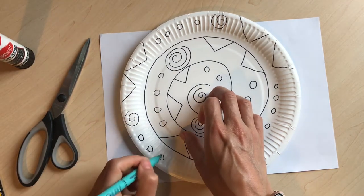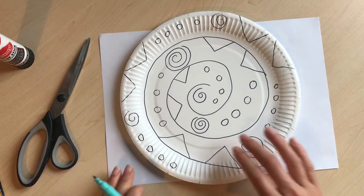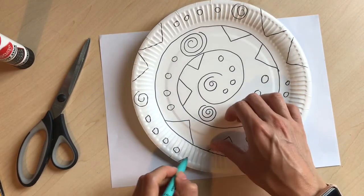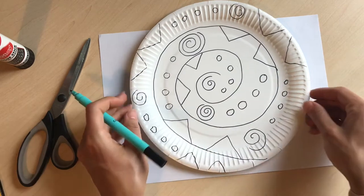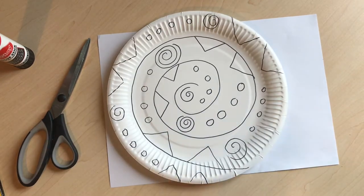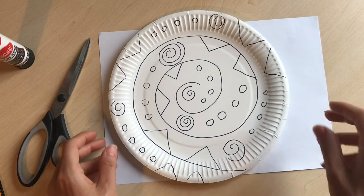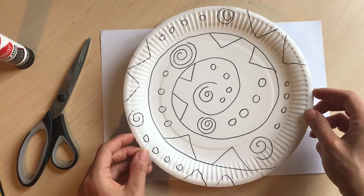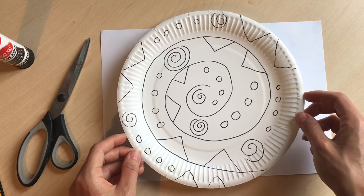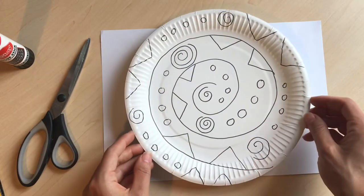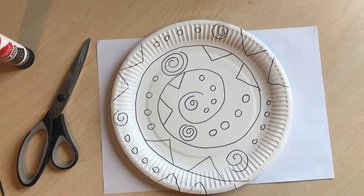And then when you color this in it'll look so cool and then I'll show you how we're going to make it look like a snail. So we've got our snail shell ready to go and like I said you can design whatever pattern you like so we're going to color that in now and then I'll show you how we're going to add the snail. Stay tuned in.